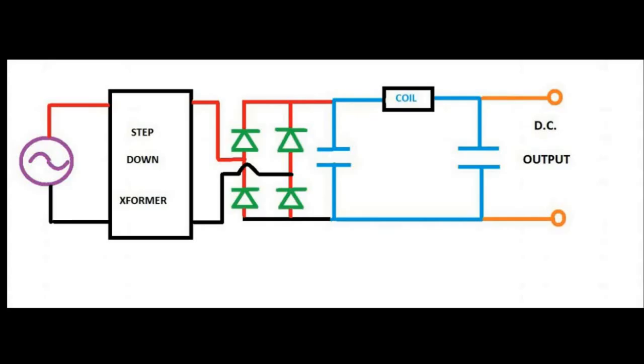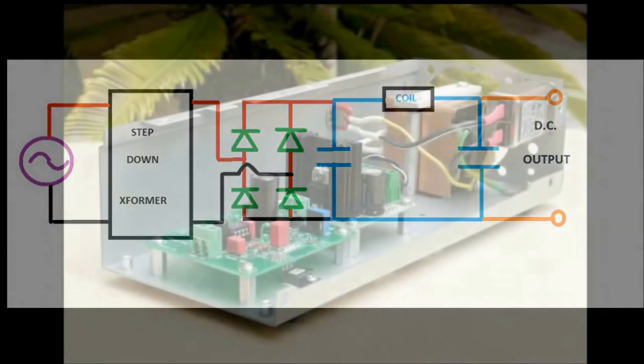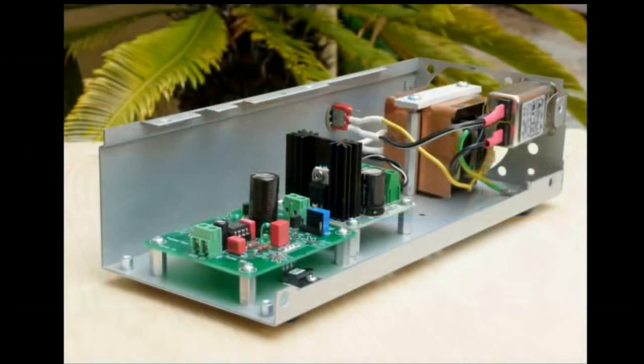So this is the circuit of a full wave bridge rectifier. In the physical world, it could look something like this with the heat sink and the transformer.